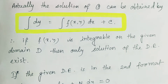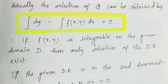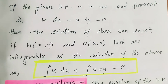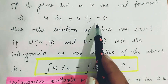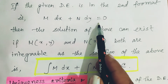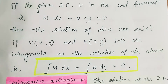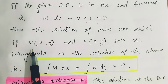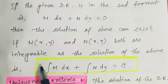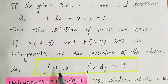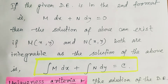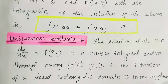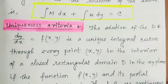From the given differential equation, if we write dy = f(x,y) dx and then integrate this entire thing, an integrating constant will be incorporated. If f(x,y) is integrable on the given domain D, then the solution of the differential equation exists. Similarly, from the form M dx + N dy = 0, if M and N are both integrable, then the solution exists.